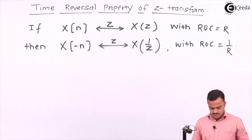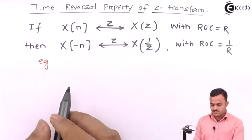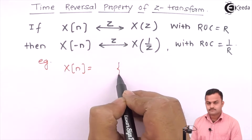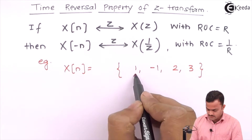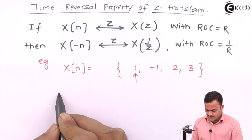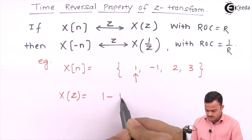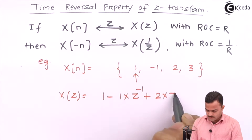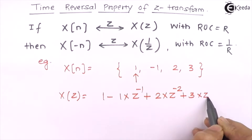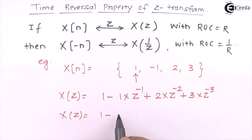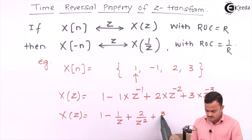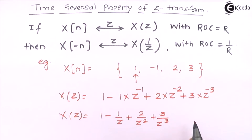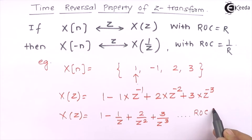Let's take a simple example. Take x of n as {1, -1, 2, 3} with the first element as the origin. We get X of z as 1 minus 1 into z raised to minus 1 plus 2 into z raised to minus 2 plus 3 into z raised to minus 3, which gives X of z as 1 minus 1 by z plus 2 by z square plus 3 by z cube. Since it is a finite sequence, the ROC is the complete z-plane.